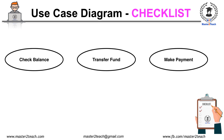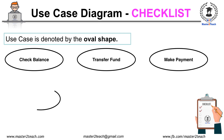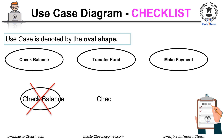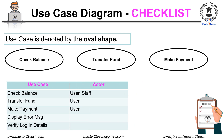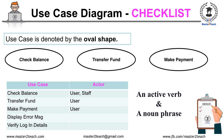A use case is denoted by the oval shape. While drawing on paper, make sure to write the use case name before drawing the oval shape, because the size of the oval may not be sufficient for the name. Also, make a list of use cases and their respective actors before drawing the diagram. The use case name is usually an active verb and a noun phrase — for example, check balance, transfer fund, make payment, display an error message, verify login details, etc. Check whether the use case names are active verb and noun phrase, and make sure the name is meaningful.